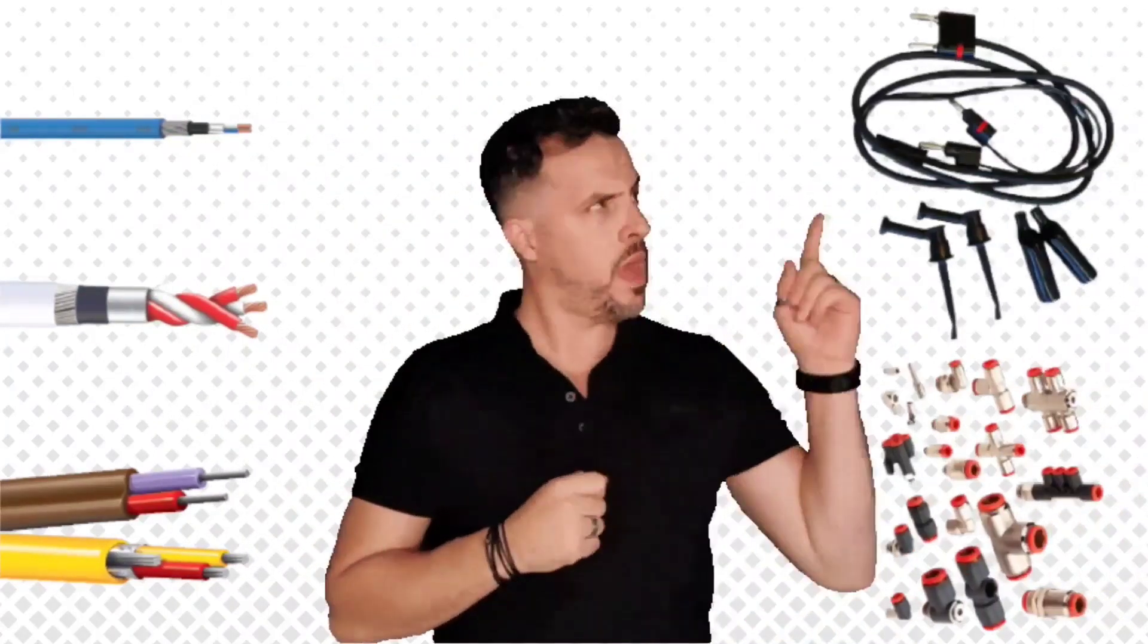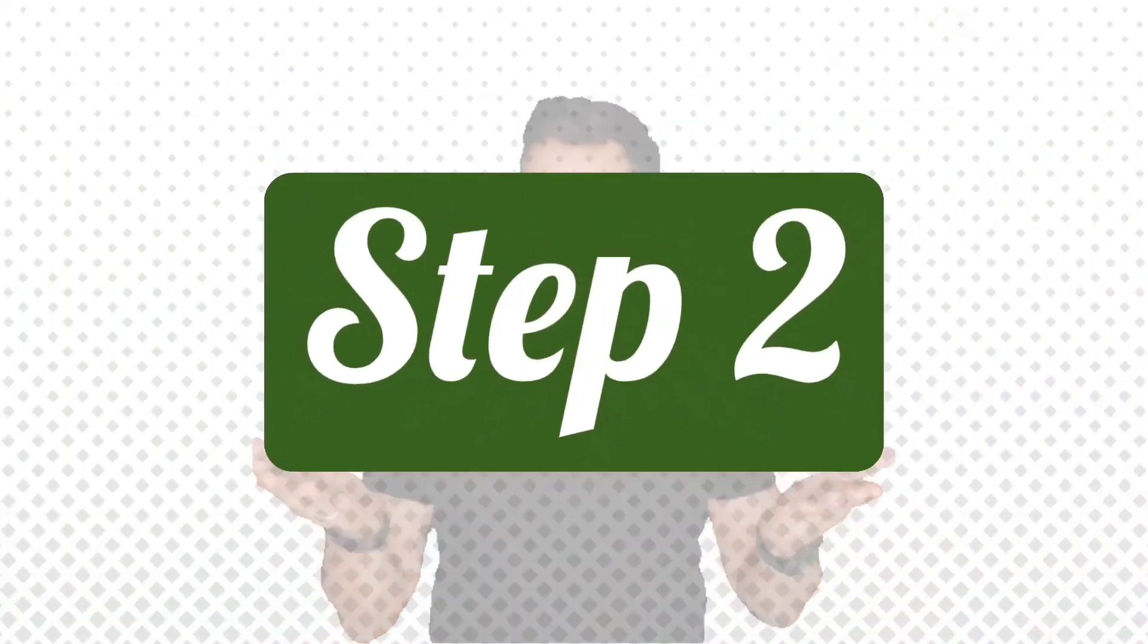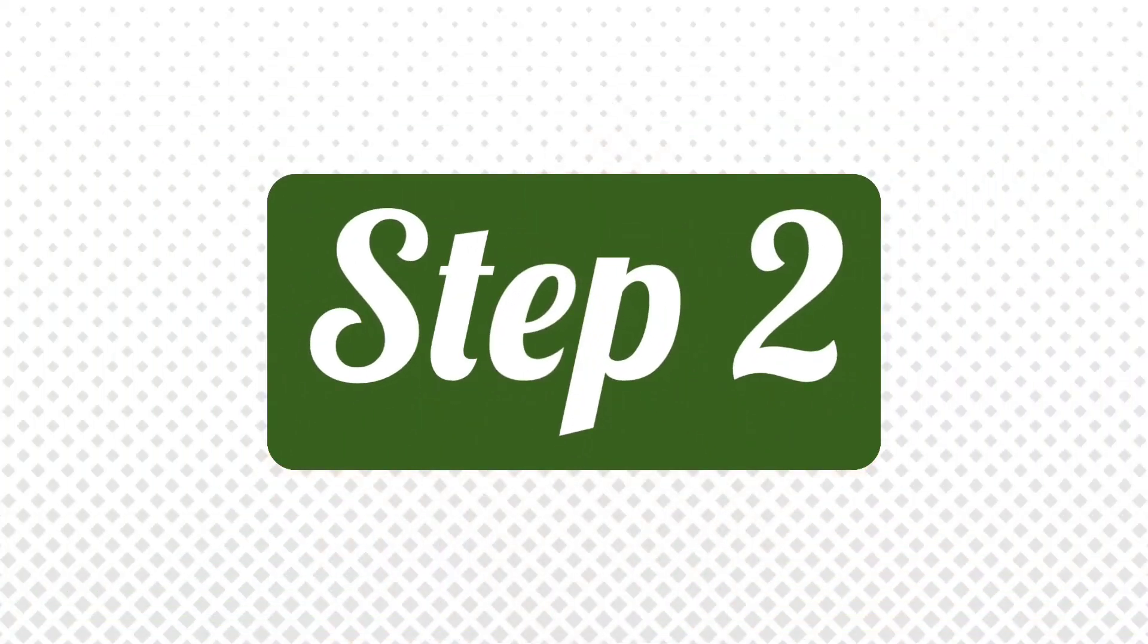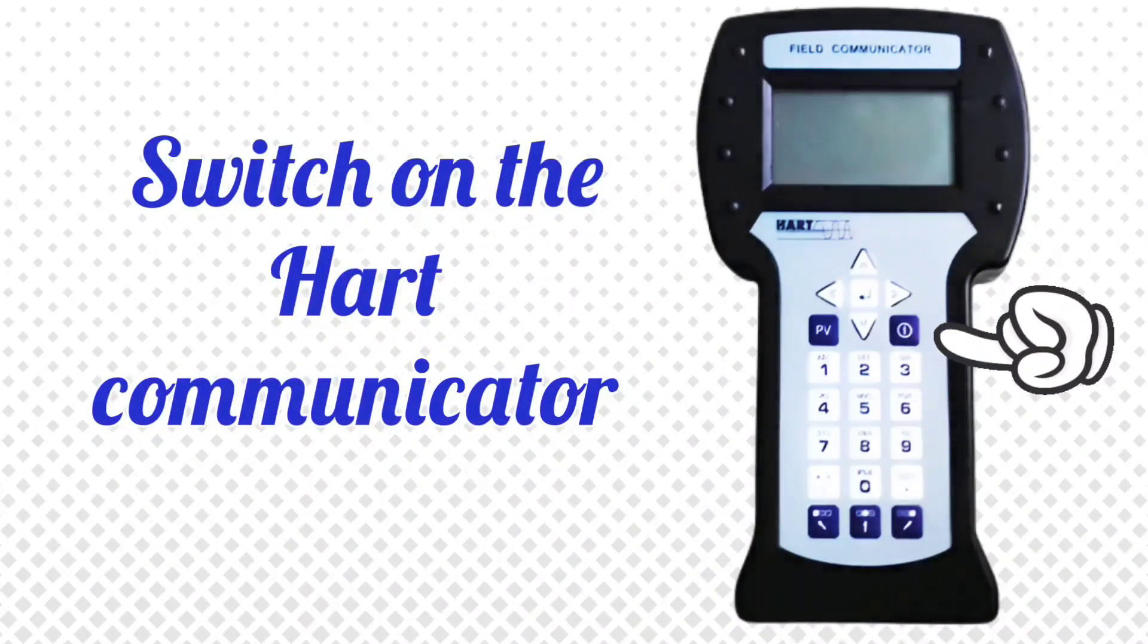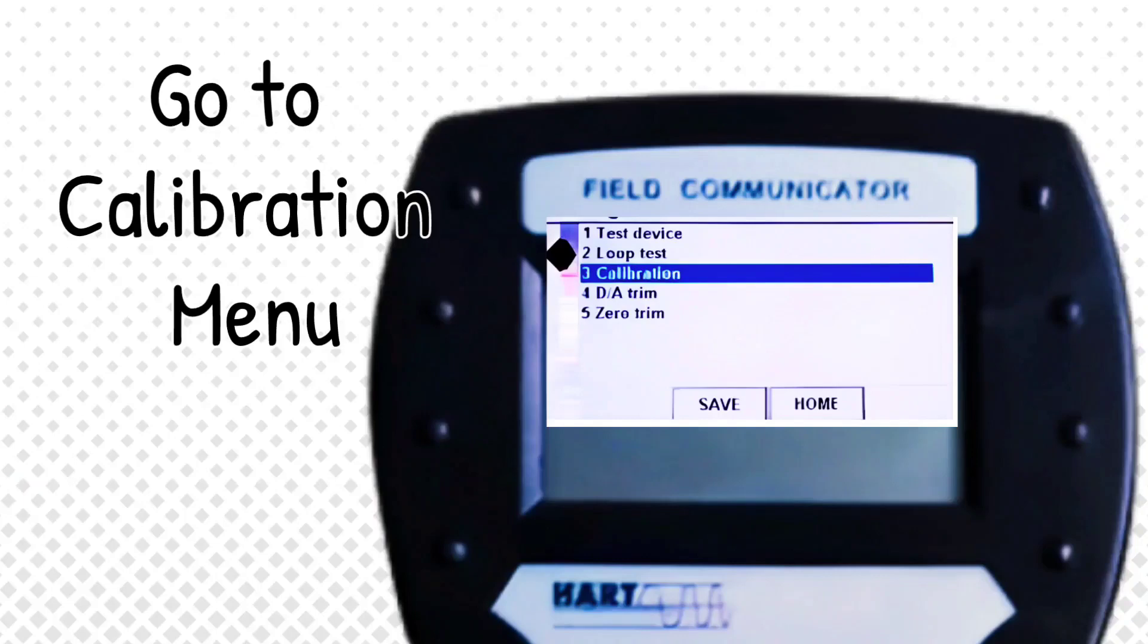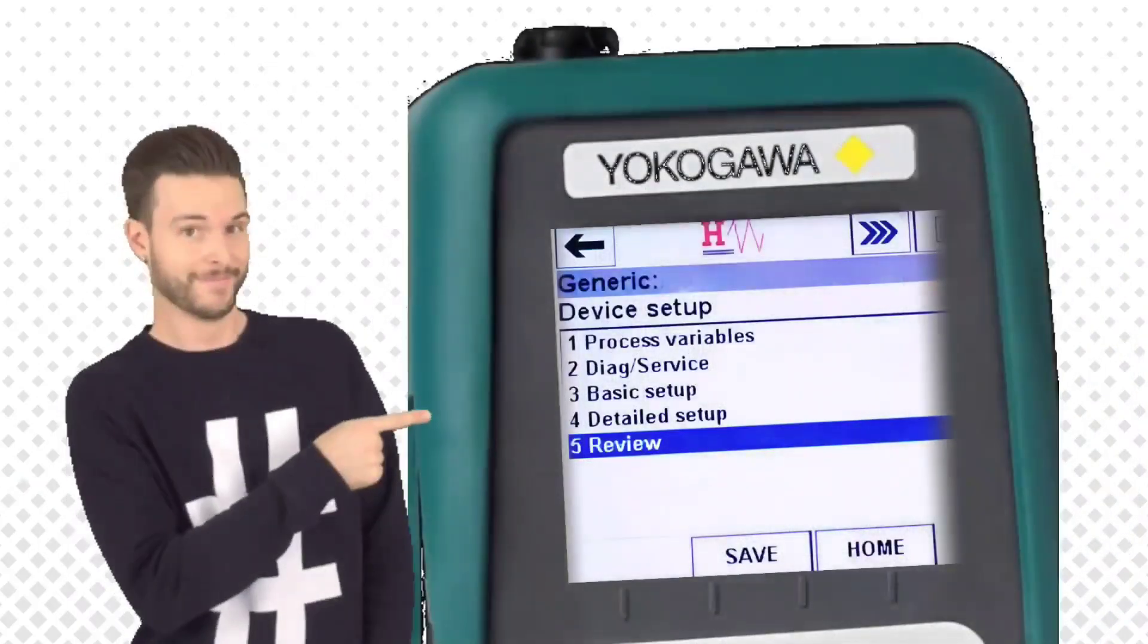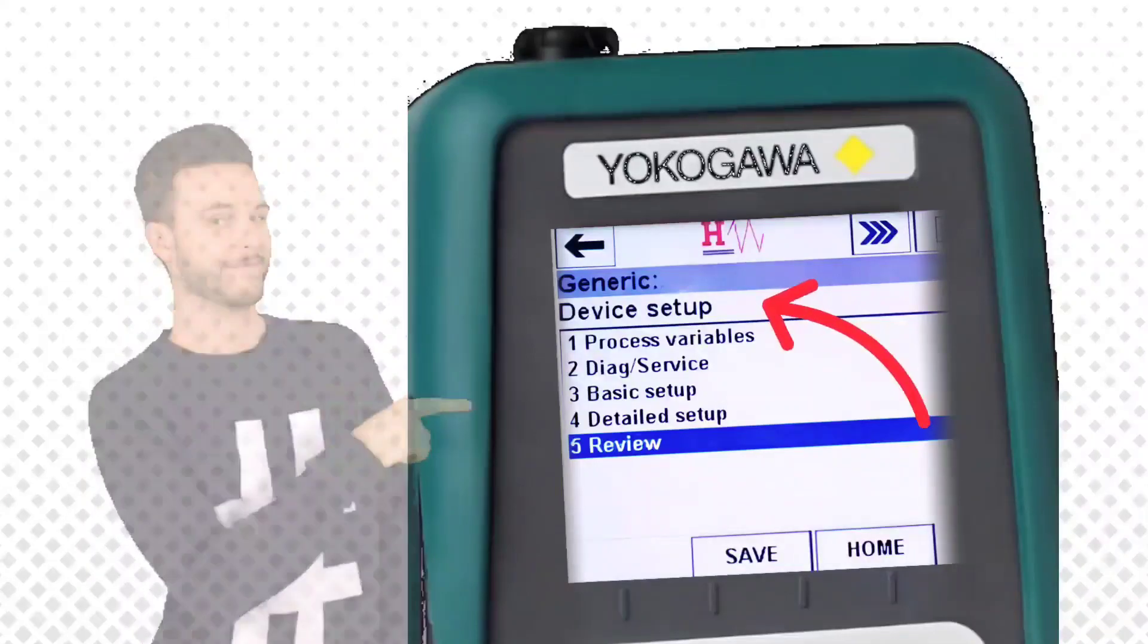After taking cables and connectors, moving on to the next step. In this step, you have to switch on Hart communicator and go to the calibration menu. In some Hart communicators, instead of the calibration menu, device setup is given.